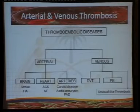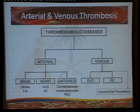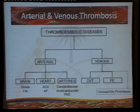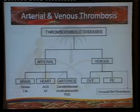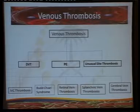Generally speaking, thrombotic disease can be arterial or venous. Thrombophilia is mainly related to venous diseases more than arterial. Venous thrombosis is either DVT or PE, which is the vast majority of cases — 95% — and the other 5% is unusual site thrombosis. Antiphospholipid can cause arterial events like stroke and acute coronary syndrome. If you have unusual site thrombosis, suspicion for thrombophilia should be high.